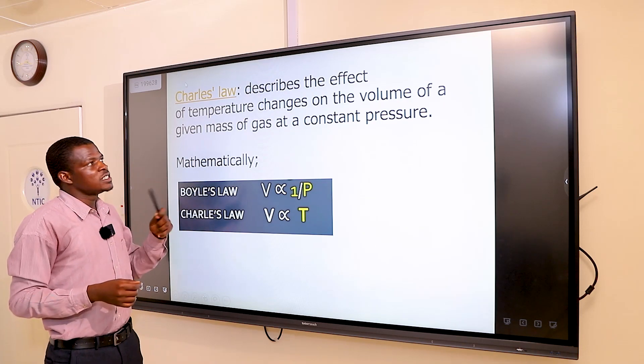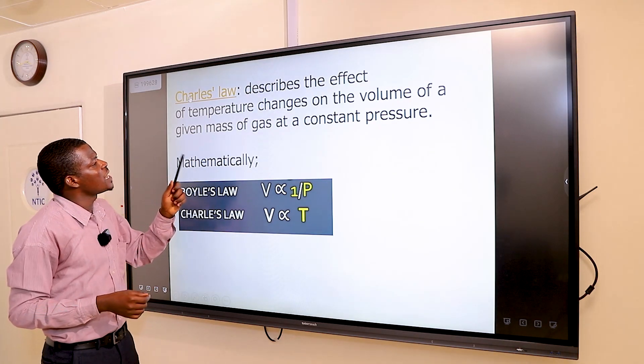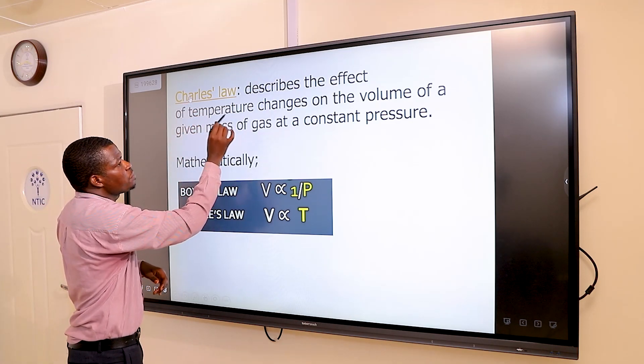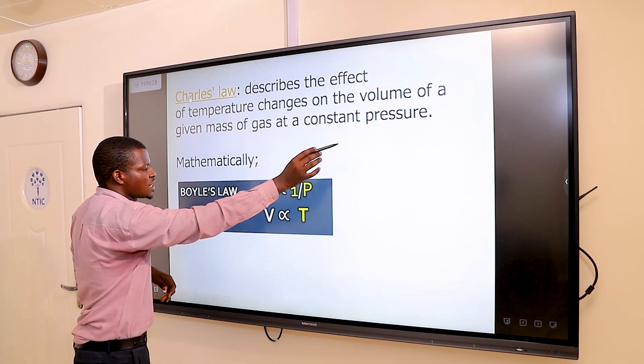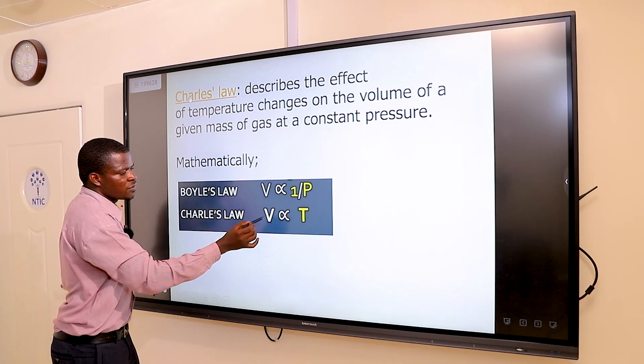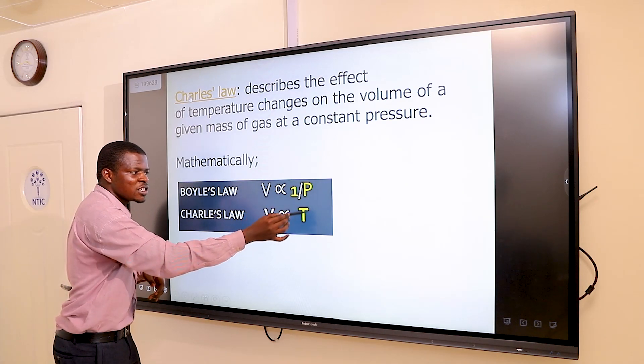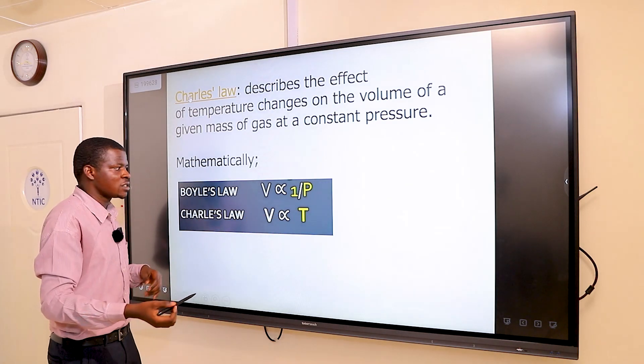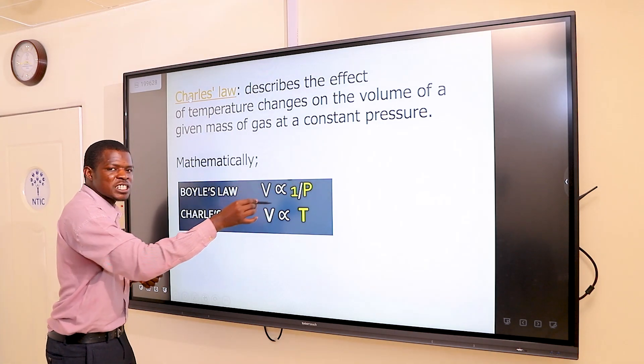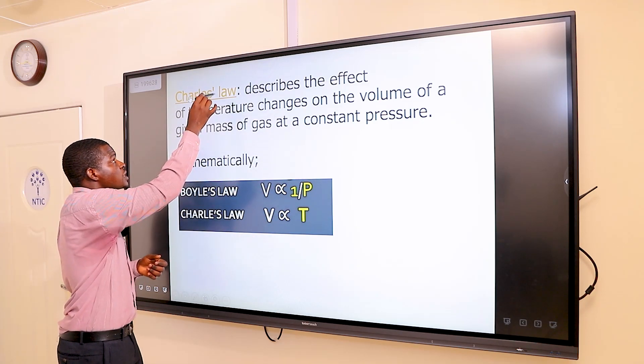Charles' law describes the effect of temperature changes on the volume of a given mass of gas. For Charles' law, we relate temperature and volume at constant pressure. Mathematically, volume is directly proportional to temperature. As the volume of a gas increases, we expect the temperature to also increase. But for Boyle's law, it relates volume and pressure, and there is inverse proportion. As volume increases, pressure decreases.